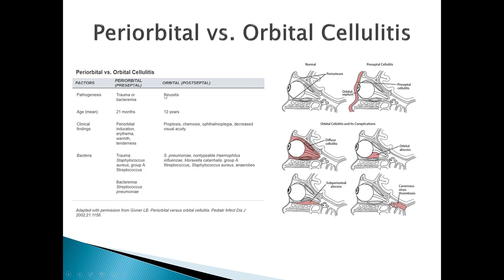Here's a summary table of the pathogenesis, mean age, clinical findings, and causative bacteria. On the right-hand side you can see differences in where the cellulitis sets up. Preseptal cellulitis is in the front portion of the eye, while orbital cellulitis impacts behind the eye, can develop into an orbital abscess, then subperiosteal abscess, and worst case moves back to the cavernous sinus, meninges, and brain. This is why orbital cellulitis is an urgent ophthalmology referral.